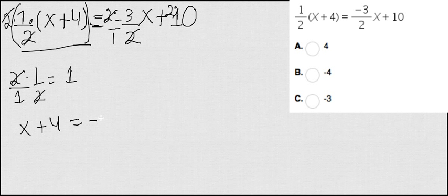This 2 is going to cancel out and then I'm just going to have -3x. Finally, 2 times 10 which equals 20. Now, I have a linear equation.